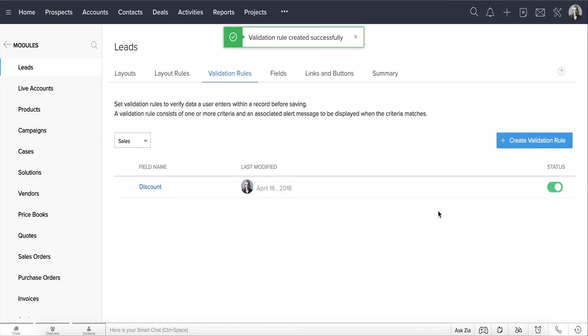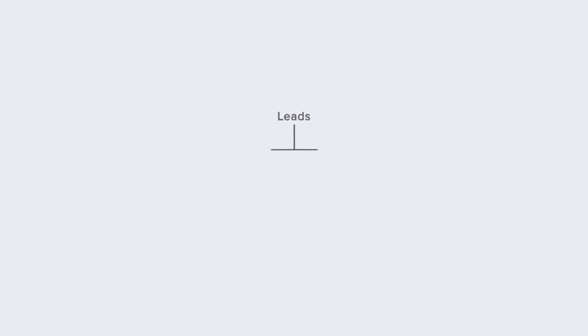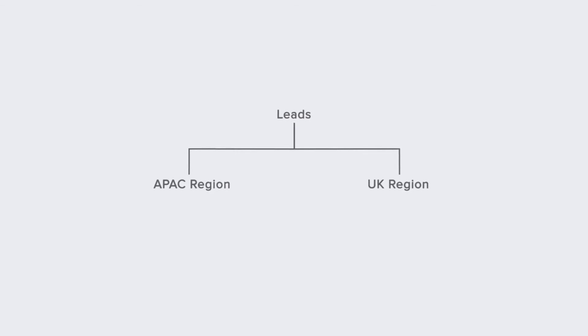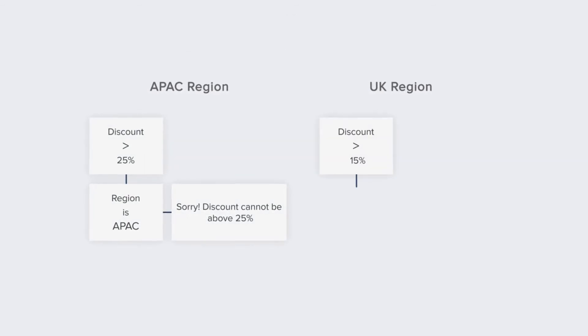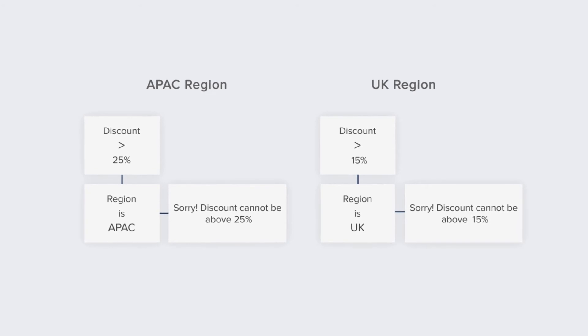We've successfully created a validation rule for Zilker Inc. based on the Discount field. Now one important thing to note: like many other features, validation rules are layout specific, which means under any module you can configure different validation rules for the same field in different layouts. For example, you can define another validation rule for the same Discount field in another layout of the Leads module.